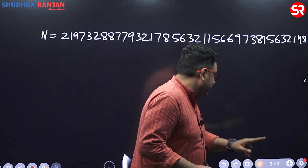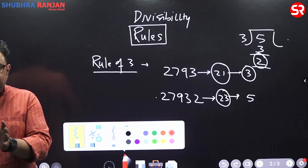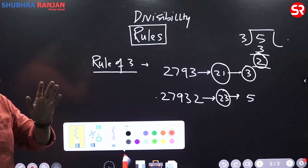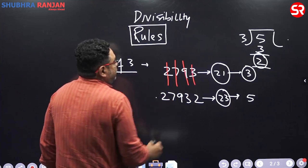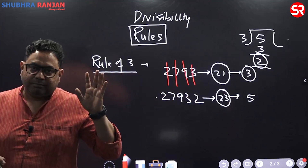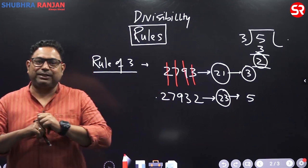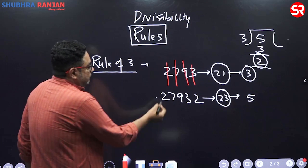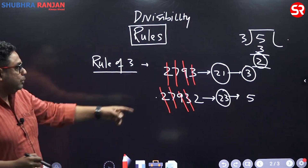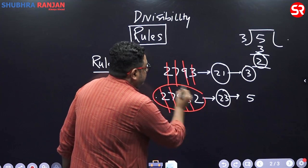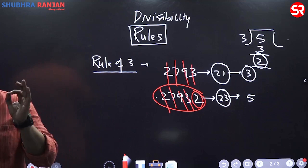So let's change this rule. Rather than adding numbers, ignore multiples of 3. For 2793: 2+7=9, ignore (multiple of 3); 9, ignore; 3, ignore — nothing is left, so 2793 is exactly divisible by 3. For 27932: 2+7=9 ignore, 9 ignore, 3 ignore — what's left is 2. So when 27932 is divided by 3, the remainder is 2. From today, the rule is: ignore multiples of 3.